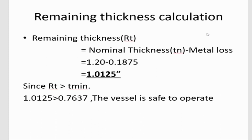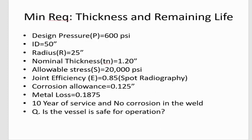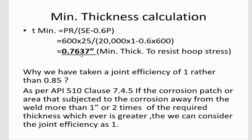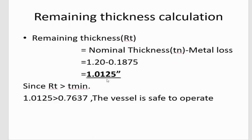Next, we calculate the remaining thickness, which is the difference between nominal thickness and actual metal loss. Nominal thickness is 1.20 inches minus metal loss of 0.1875 inches, giving a remaining thickness of 1.0125 inches. Since our remaining thickness of 1.0125 inches is greater than the minimum required thickness t_min of 0.7637 inches, the vessel is safe to operate.